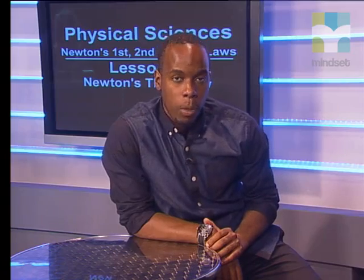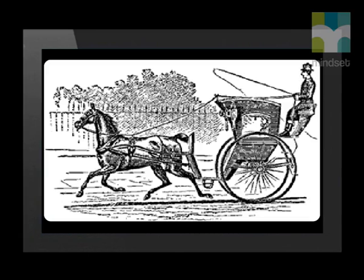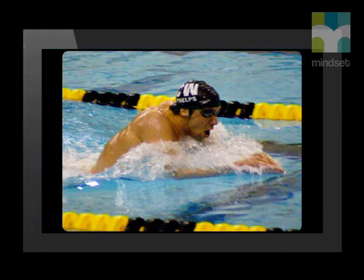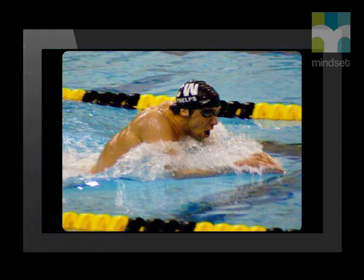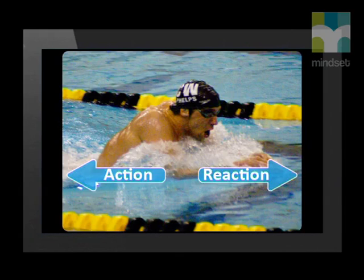Here are a few more examples — see if you can identify the action-reaction pairs in each case. Horses pull a carriage; a swimmer swims through the water. The horses exert an action force on the carriage, and the carriage exerts a reaction force on the horses. The swimmer exerts an action force on the water, and the water exerts a reaction force on the swimmer.